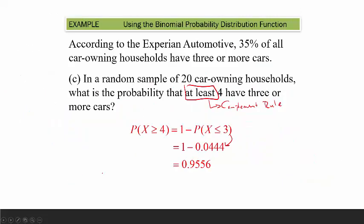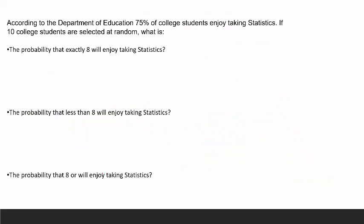All right, so let's do a full example here. According to the Department of Education, 75% of college students enjoy taking statistics. If 10 college students are selected at random, so right off the bat, look at this. We know we're going to select 10, and we know the probability that they enjoy taking statistics is 0.75. What is the probability exactly 8 of the 10 will enjoy taking statistics? Well, so it's an exactly, so it's a probability that the number of successes is 8. So whenever it's exactly, it's a Binome PDF. So remember, you go N, which is 10. P, the probability that they do enjoy taking statistics is 0.75. I think that's low. And then next, X is 8.